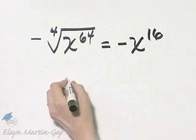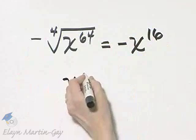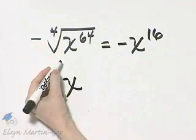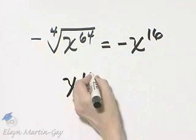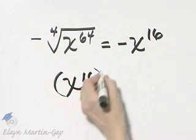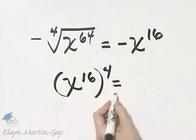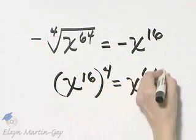Now let's concentrate on that x to the 16th for a moment. Why is the fourth root of x to the 64th equal to x to the 16th? It is because x to the 16th raised to the fourth power is x to the 64.